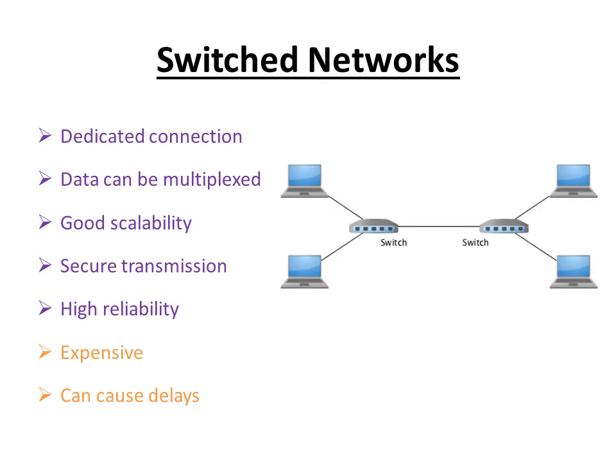Coming to switched networks, they use network switches which allow a dedicated connection to each workstation and also allow multiple conversations at a single time, meaning traffic can be multiplexed from multiple sources. The drawbacks are that they are quite expensive compared to others and can cause delays since switches need to learn the location of all nodes before transmission — though that only happens once in a while. However, switches provide secure communication with good scalability, reliability, and tend to avoid data collisions.